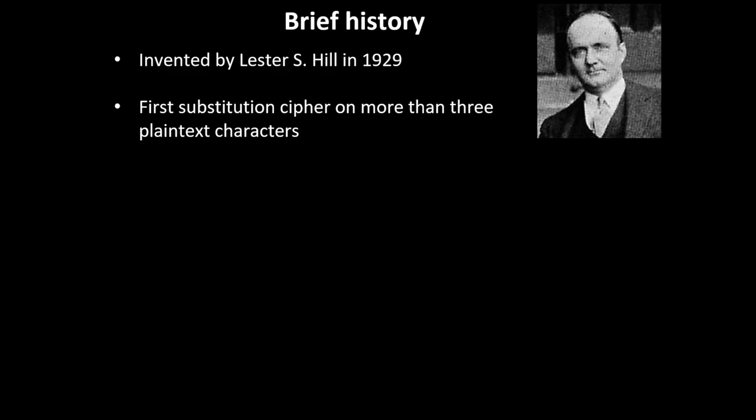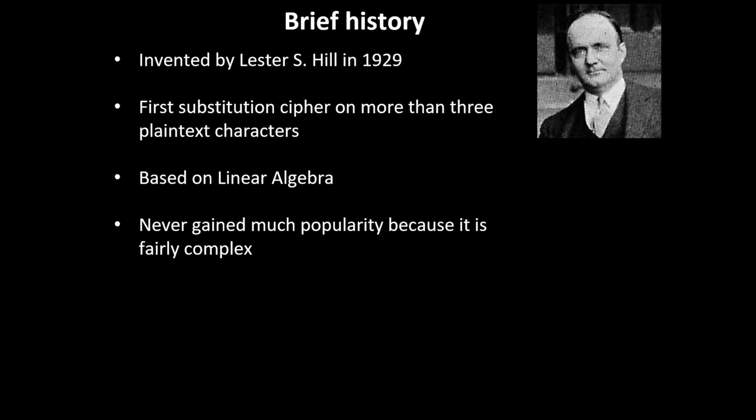The Hill cipher is a linear algebra-based cipher. It was invented by Lester Hill in 1929, and it is the first substitution cipher that works on more than three plaintext characters at a time, so it can substitute more than three simultaneously.